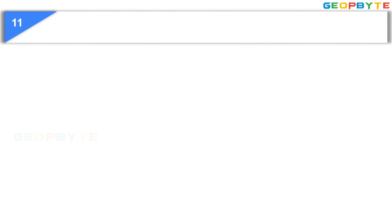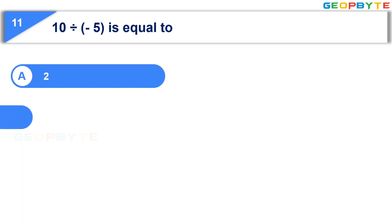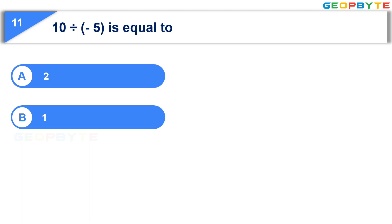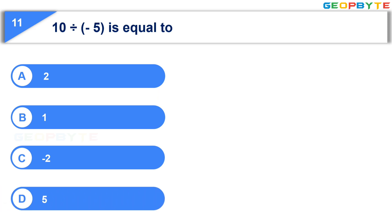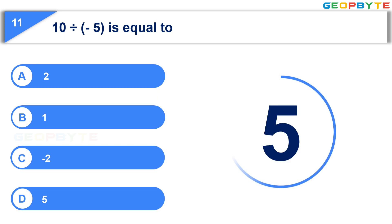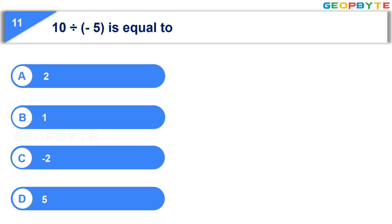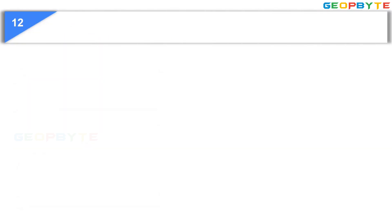The eleventh question: 10 divided by minus 5 is equal to — Option A: 2. Option B: 1. Option C: minus 2. Option D: 5. Your time starts now. Your time is up. And the correct answer is Option C: minus 2.